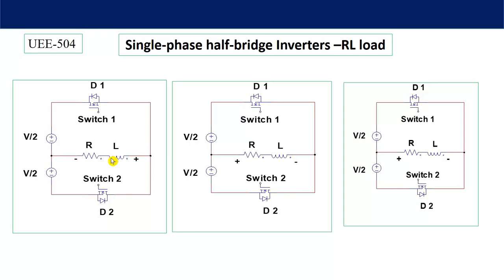The property of an inductor is that it will not allow the current to change instantaneously. So at the time when switch two is made on, the current will not reverse immediately. The stored energy in the inductor will try to find a path through which it can discharge its current. At the same time, we will observe the voltage across diodes D1 and D2 — if it is negative, the diode will be reverse biased, but if it is positive, the diode will get forward biased. The inductor will choose the least impedance path to discharge its energy.